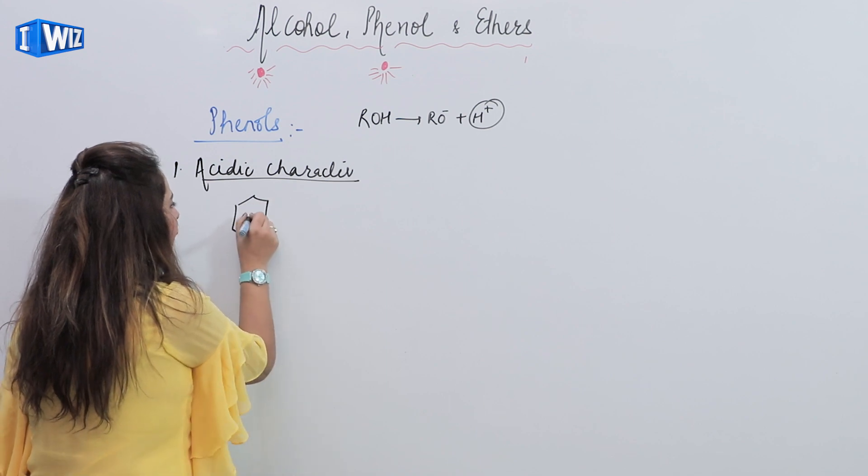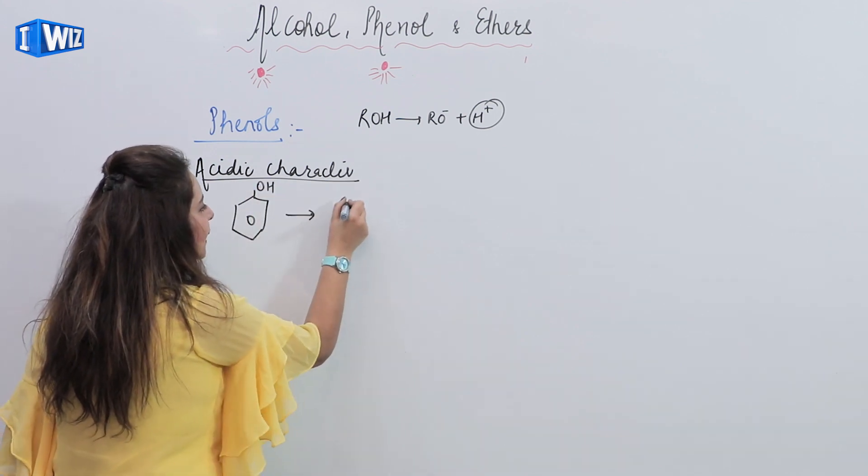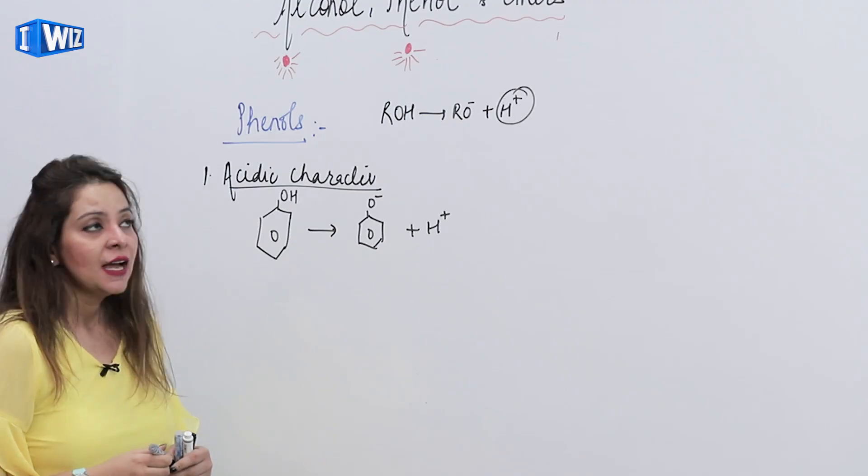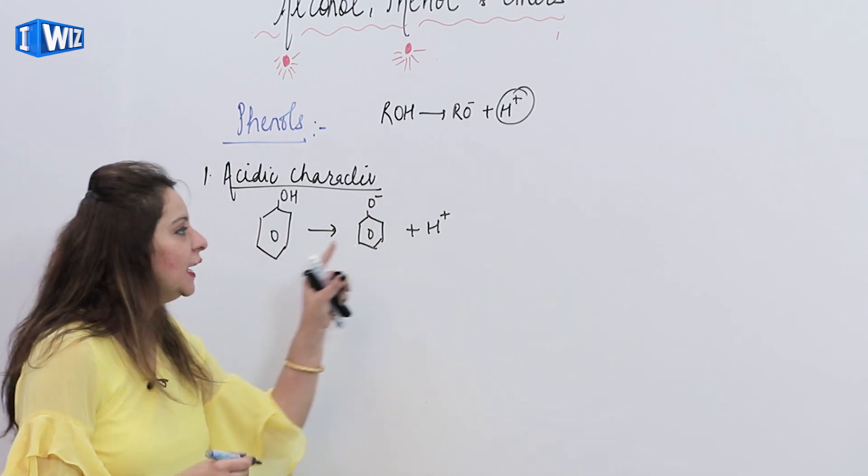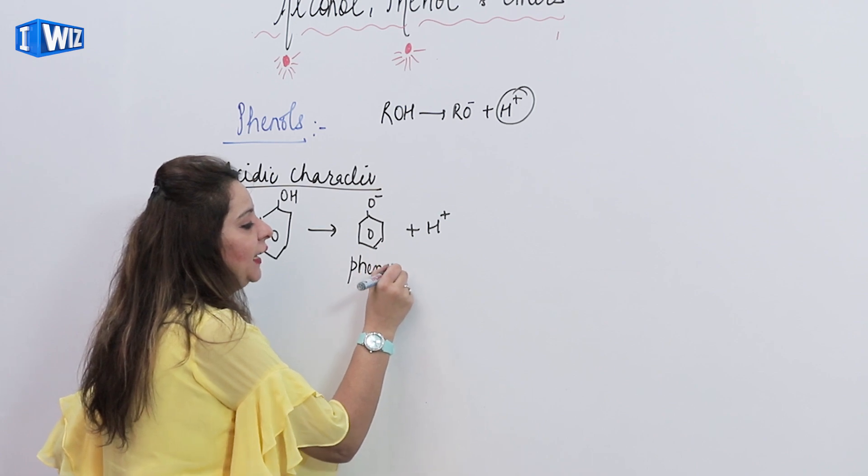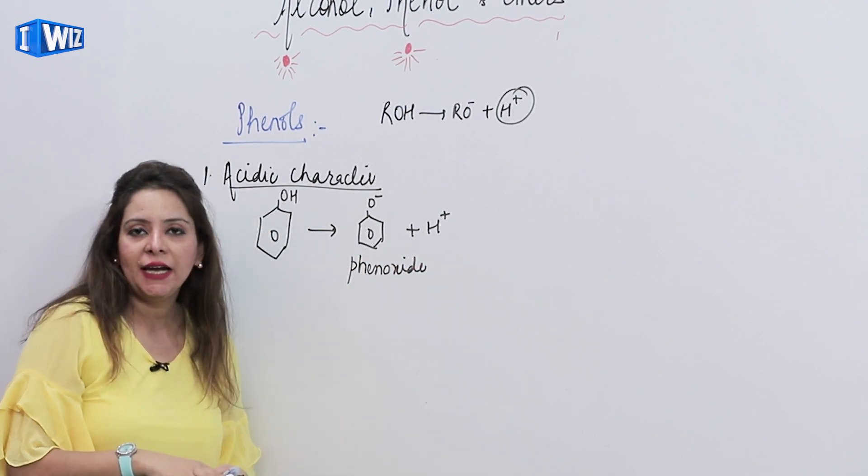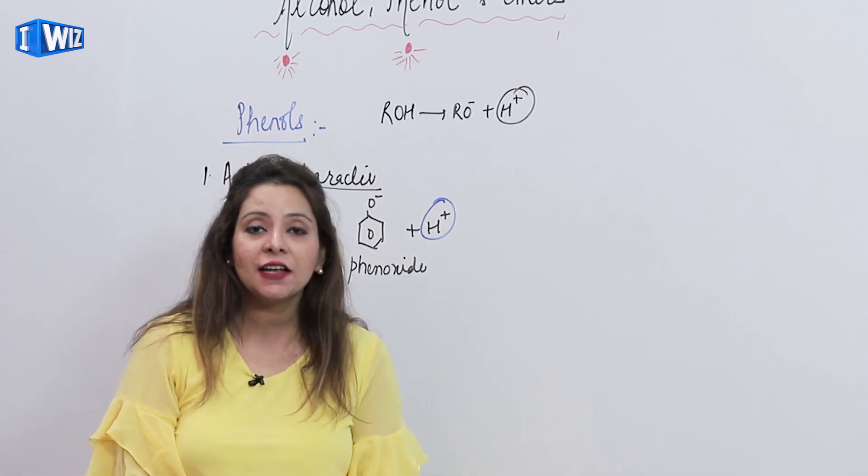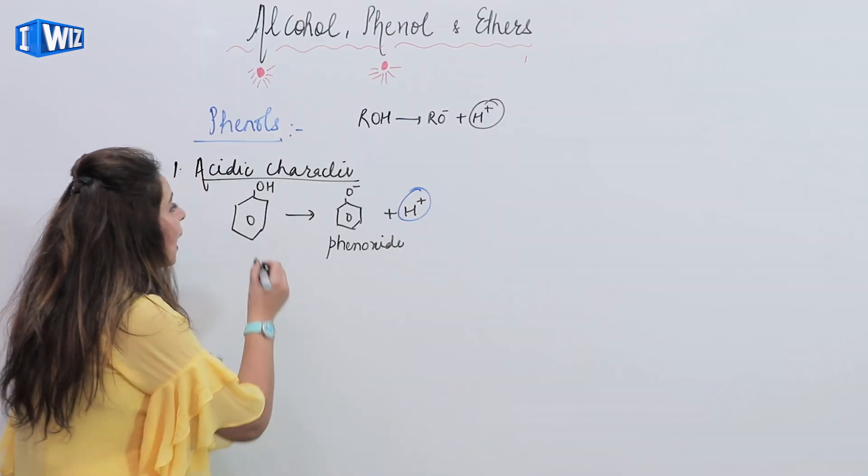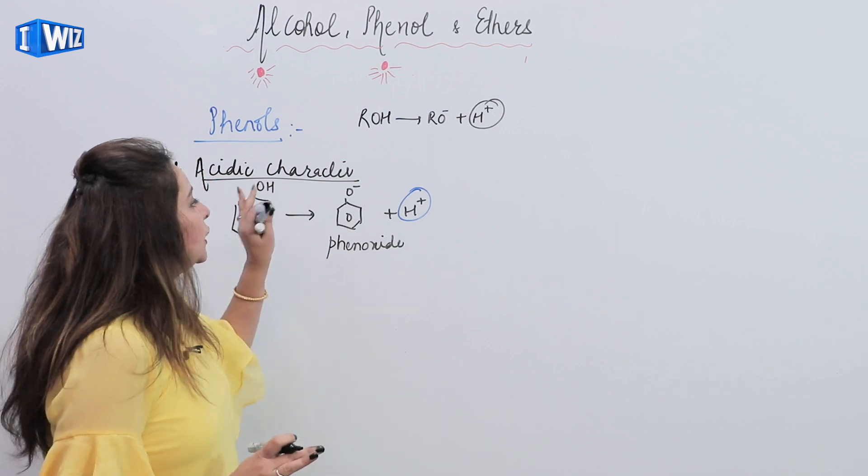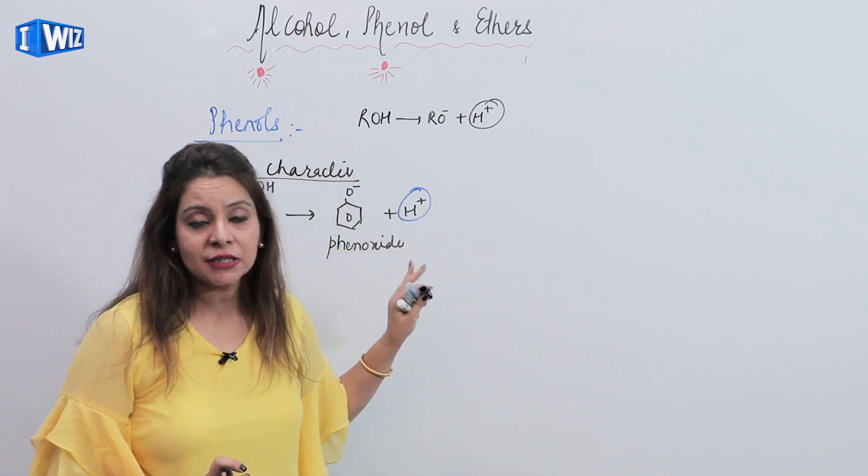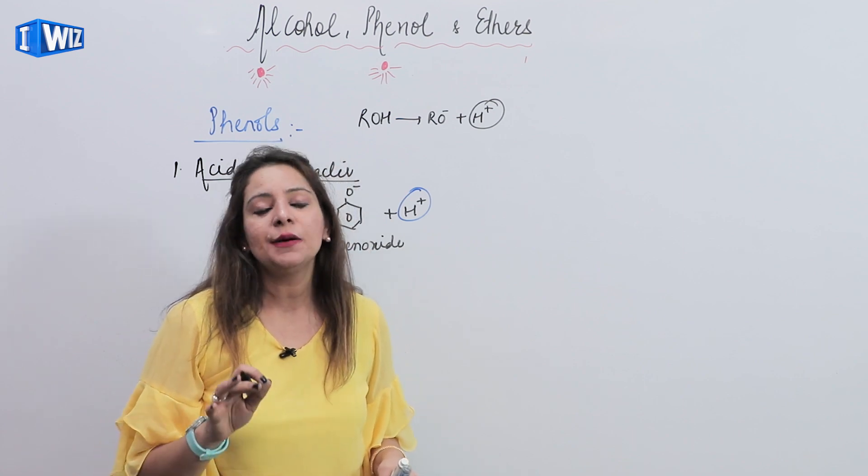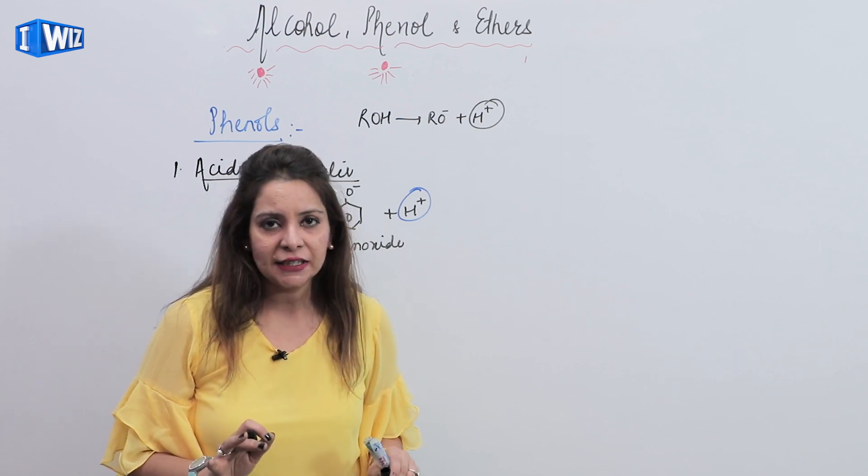Because in alcohol, when alkoxide ion and hydrogen ion were being released, it was revealing to us that alcohols have acidic character. Similarly, if we talk about phenols, phenols also have acidic character. That means if you make phenol like this, it can also break into O negative plus H positive. This is called phenoxide ion.